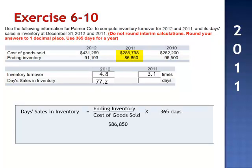In 2011, ending inventory is $86,850. We divide by cost of goods sold $285,798 and multiply by 365. In 2011, we had 110.9 days of sales in ending inventory.